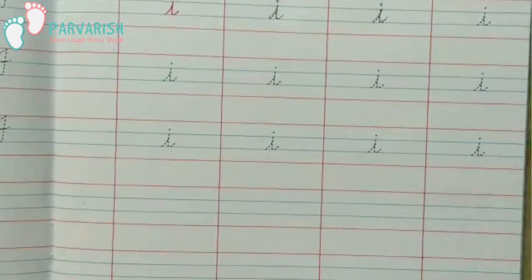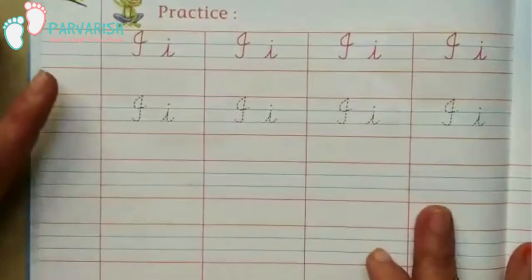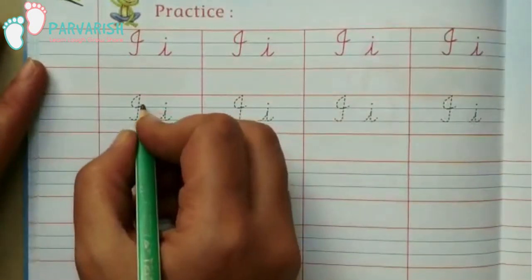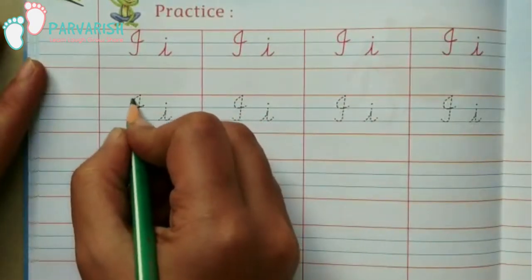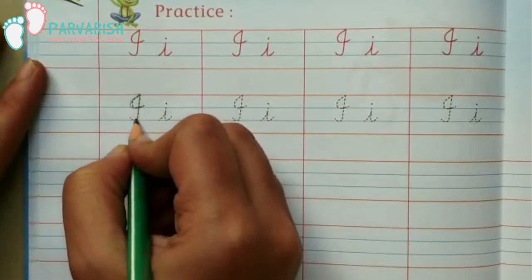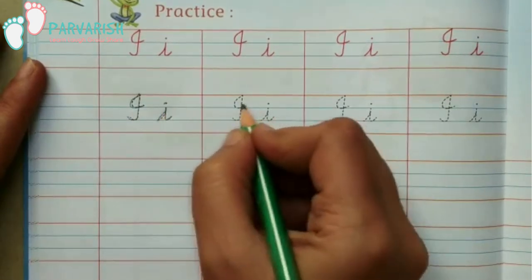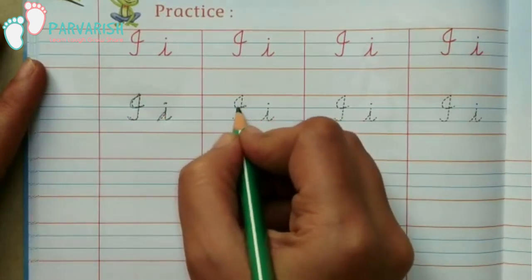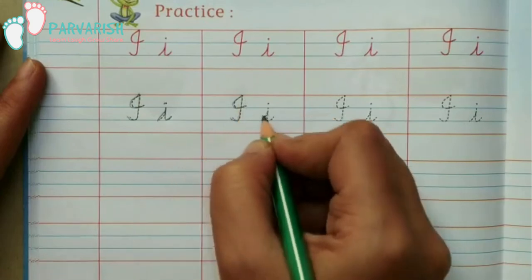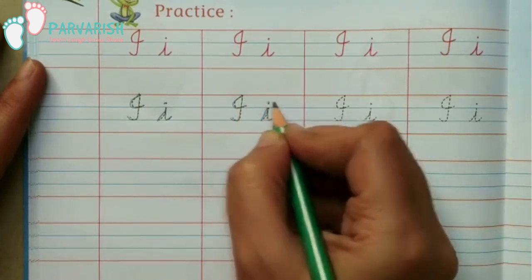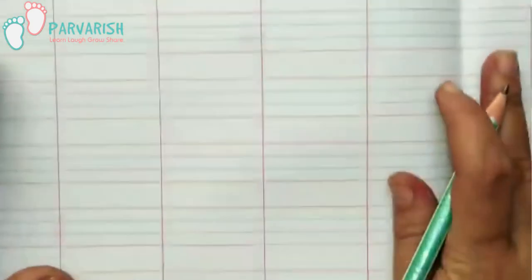Fill the whole page. Then we will practice both letters together — capital cursive I, small cursive I. First, let me see this trace: capital cursive I, small cursive I. After then, fill the whole page.